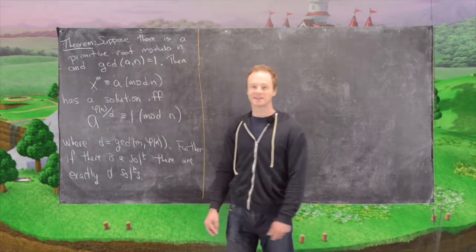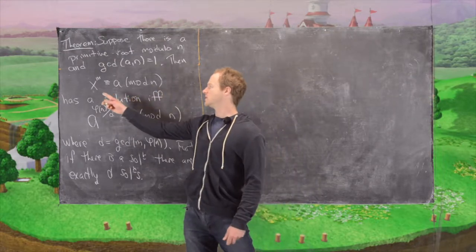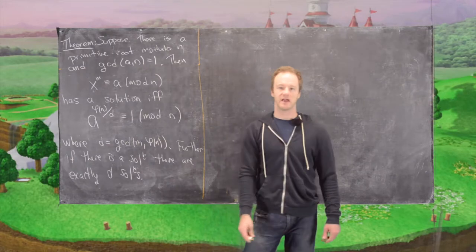Then this equation x to the m is congruent to a mod n. In other words, x in this case would be something like the mth root of a mod n.